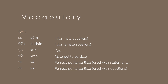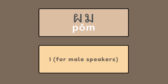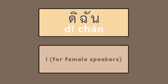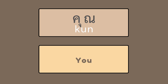Now it's your turn. First, listen and then repeat. ผม — I, for male speakers. Now repeat: ผม. ดิฉัน — I, for female speakers. Now repeat: ดิฉัน. คุณ — you. Now repeat: คุณ.